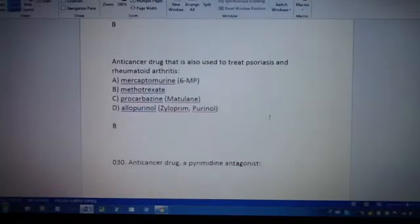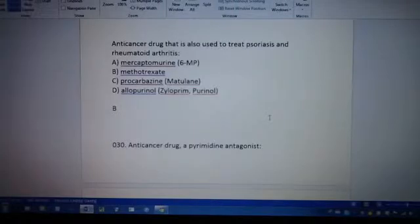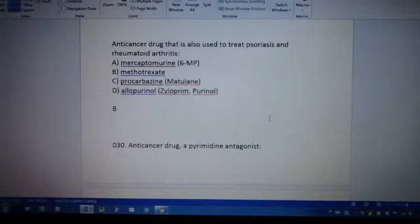Next one. Anticancer drug that is also used to treat psoriasis and rheumatoid arthritis. This is a popular question. A, mercaptopurine, or 6-MP, and methotrexate for B, and procarbazine for C, and allopurinol for D. The answer is B. Methotrexate is used to treat psoriasis and also rheumatoid arthritis. So, this is also a cancer drug.